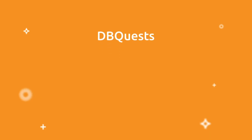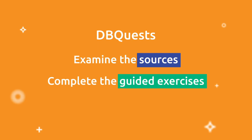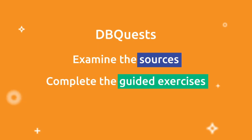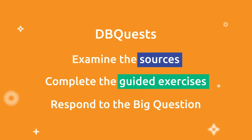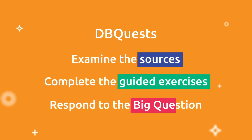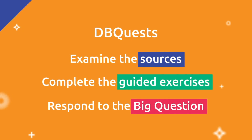To finish the module, students will go through the same four-step process with the two remaining sources, be guided through an exercise to compare and contrast the sources, and finally, they will be presented with their individual source work to respond to the big question with their claim, incorporating evidence from all three sources in their final response.